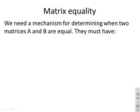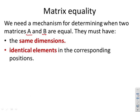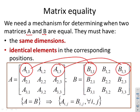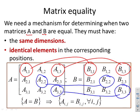Matrix equality: we need a mechanism for determining when two matrices A and B are considered equal. In order to be equal, the matrices must have the same dimensions and must have identical elements in all corresponding positions. That is, A and B are equal if and only if A₁₁ = B₁₁, A₁₃ = B₁₃, A₂₂ = B₂₂, A₃₃ = B₃₃, and so on — all corresponding coefficients must be equal.